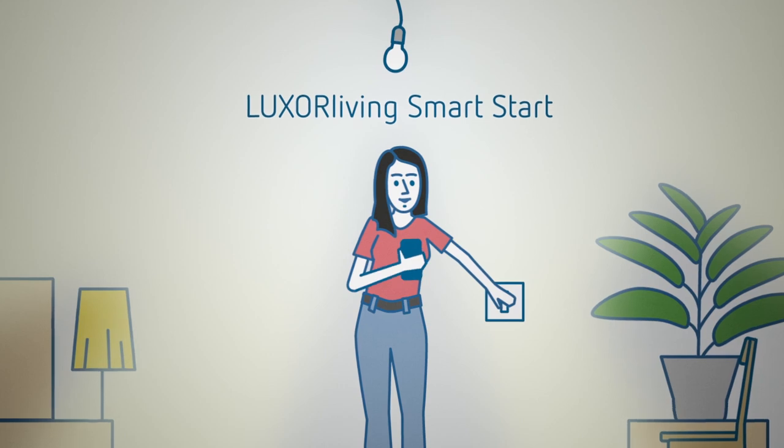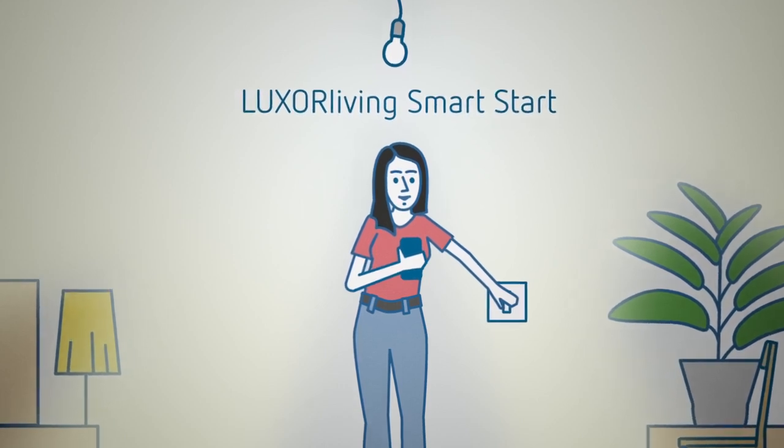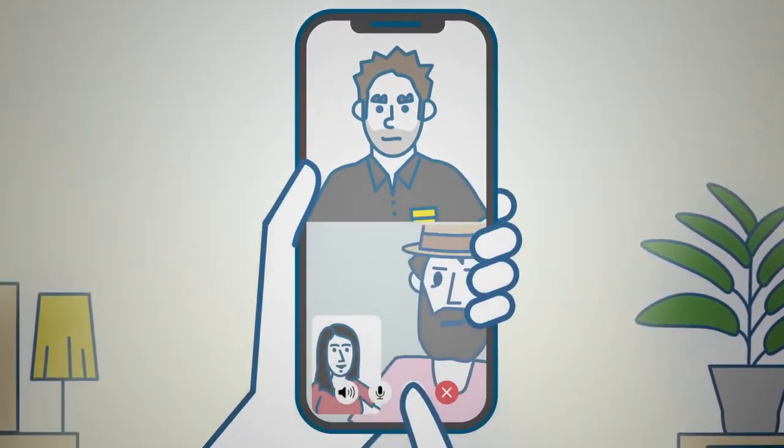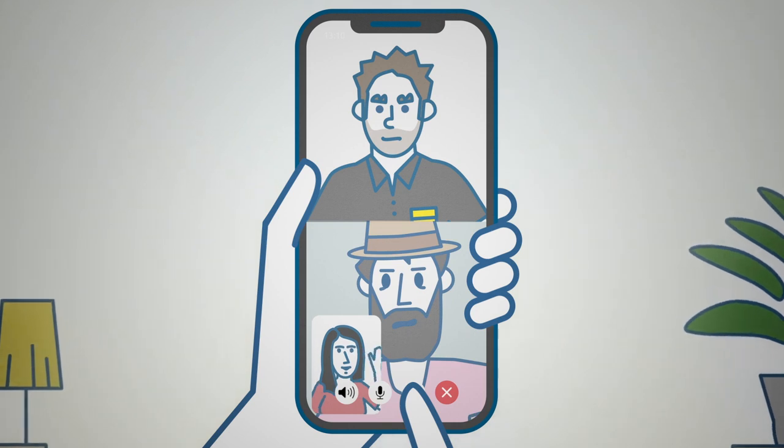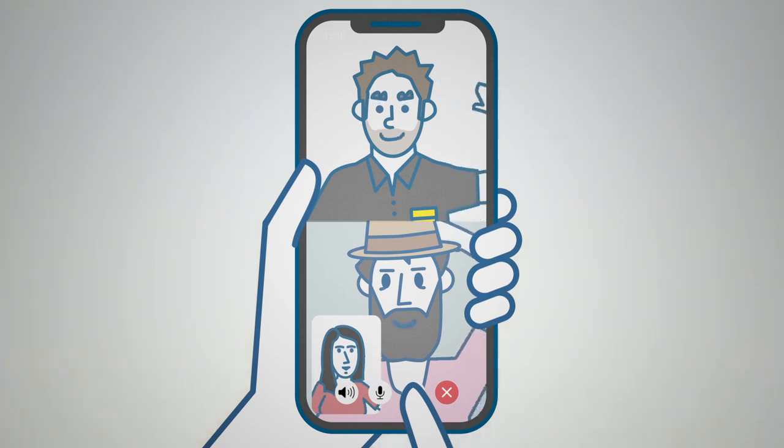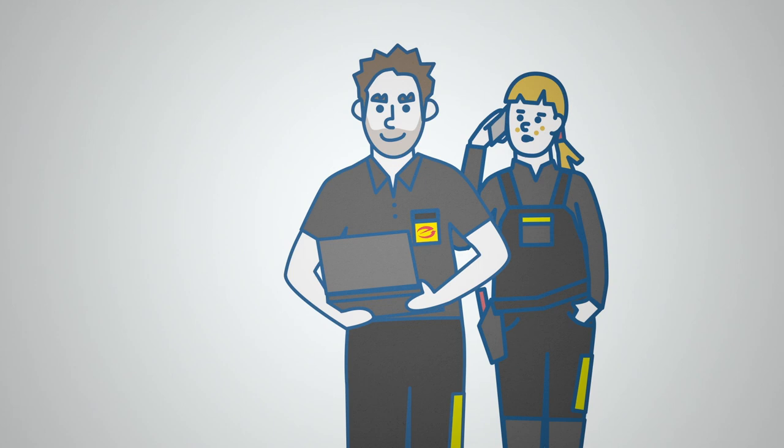Luxor living smart start works by radio. And it's so simple and safe that even the smallest hut can be transformed into a cozy smart home. And this is how it works.